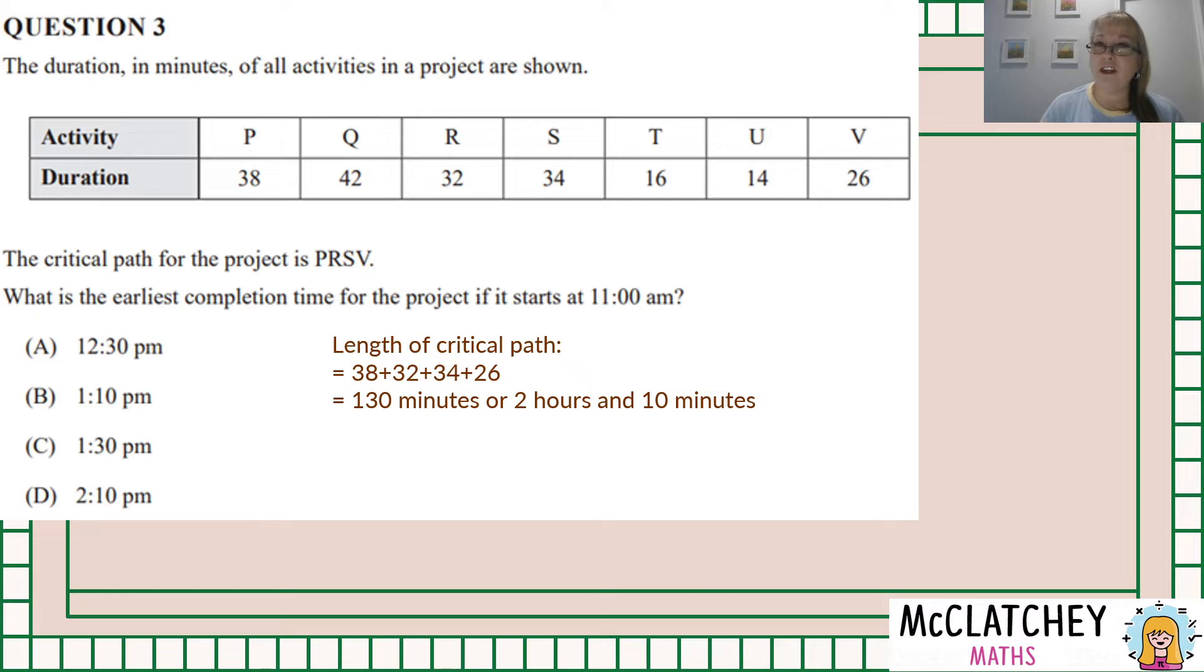If you try and do 130 divided by 60 on your calculator it gets a little bit more complicated because it's going to show two point something and whatever that point something is people always confuse with the minutes which is not correct. So just remember that calculators work on decimals and our time is actually based on 60 not 100. Okay so we know that the time started at 11 a.m. so if we add the two hours to the 11 we get to 1 p.m., add 10 minutes more we get to 1:10 p.m. which gives us the only possible answer being B.